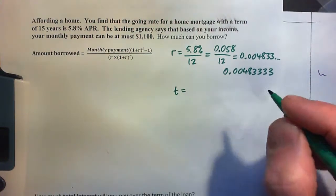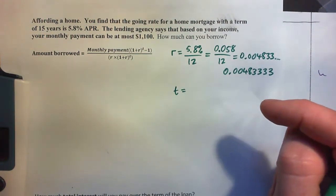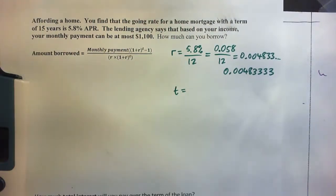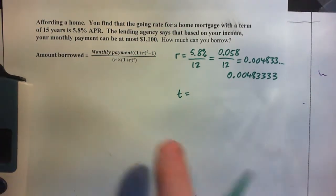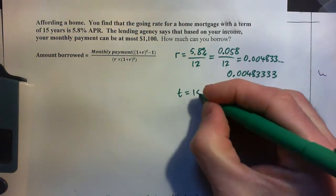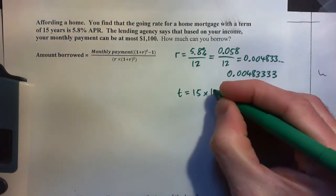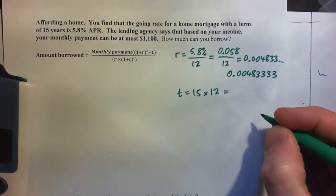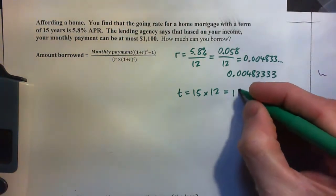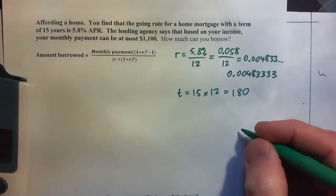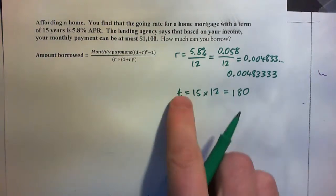T is the number of payments we'll make over the life of the loan. Now how do we find T? It's a 15 year loan so you go 15 years times 12 months. That is 180 payments over the term of the loan. So we have our R and we have our T.